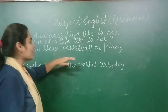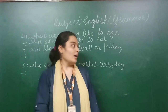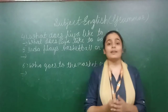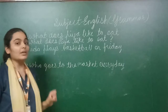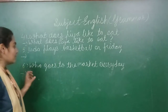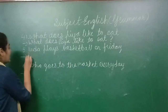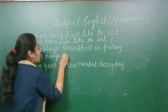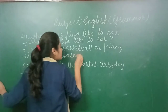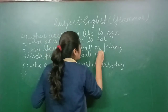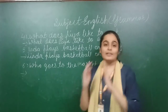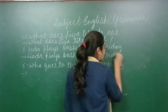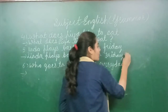Example five: 'Linda plays basketball on Friday.' Linda is a name, and it is also the beginning of the sentence, so the first letter L is written in capital. 'Friday' is a particular day, so we write F as capital. There is no question here, so we go with a normal full stop at the end.